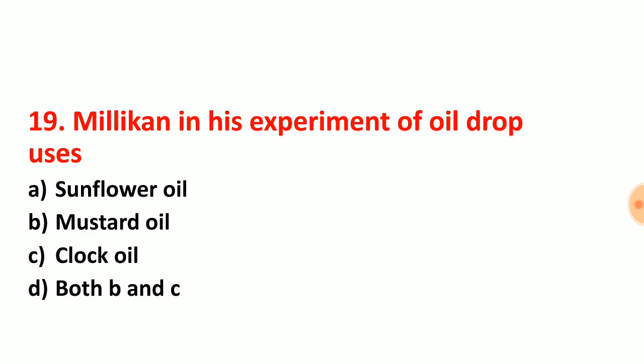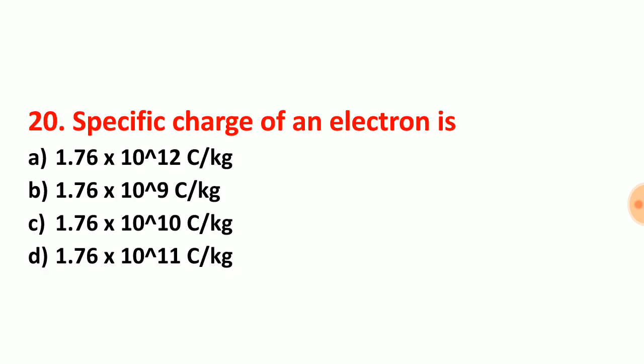Question number 19: Millikan in his oil drop experiment uses clock oil. Option choice C is the right answer for question number 19.